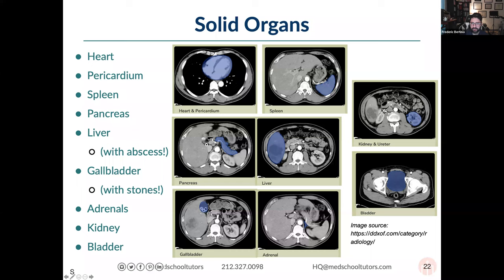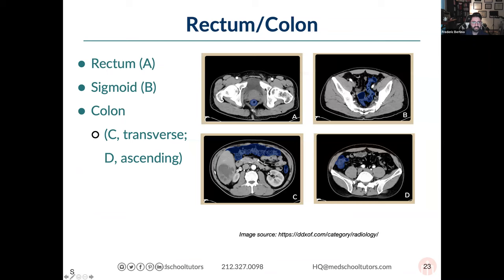The kidneys are two paired retroperitoneal structures surrounded by fat. The right kidney sits a bit lower than the left because the liver pushes it down. The gallbladder sits in the gallbladder fossa, anterior and underneath the liver on the right — this one has calcified gallstones visible inside. The adrenal glands look like triangular wizard hats sitting on top and anterior to the kidneys; thickening suggests hyperplasia, while masses or nodules could represent adenomas or pheochromocytomas. The urinary bladder is low in the pelvis between the pelvic bones.